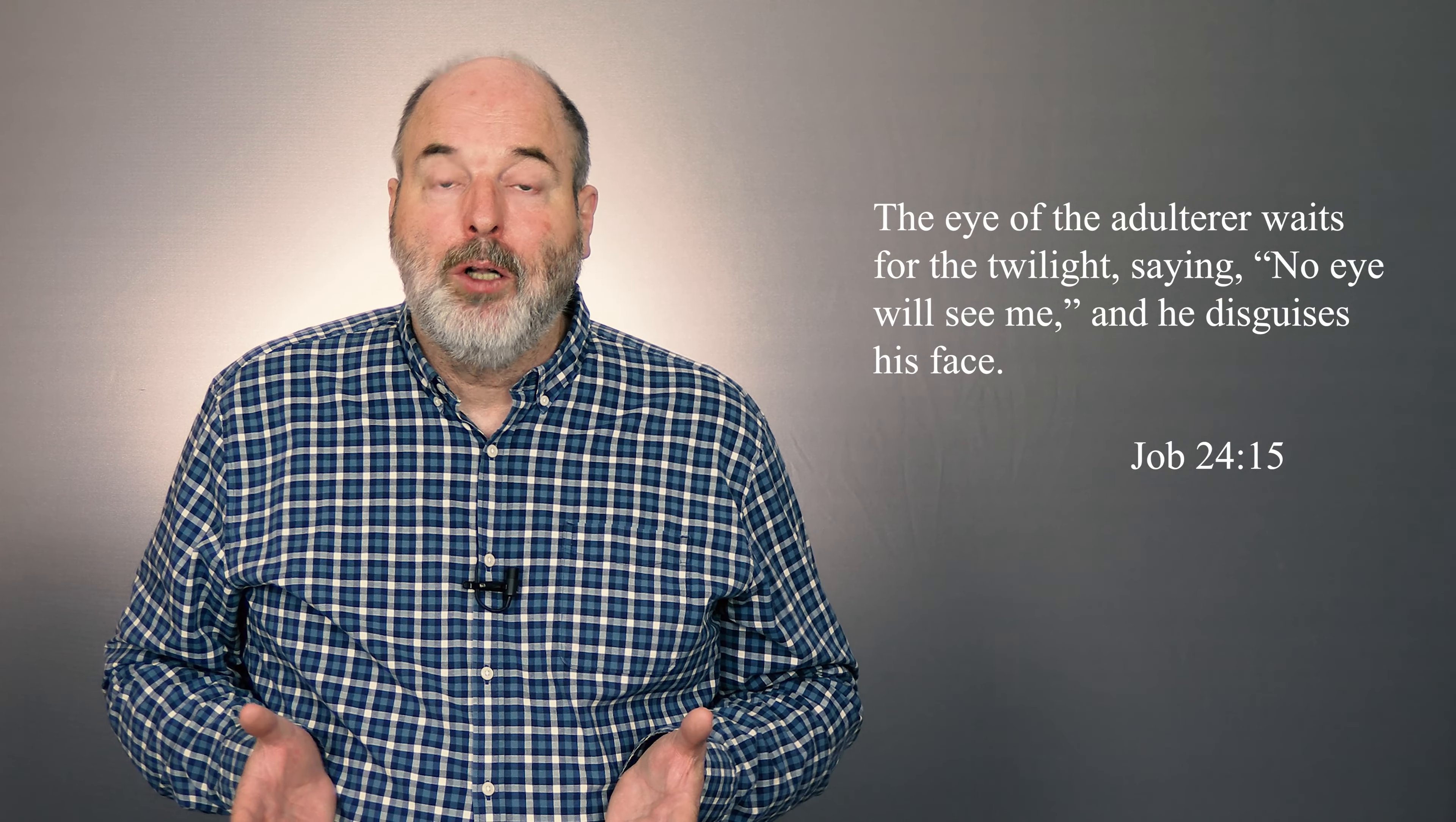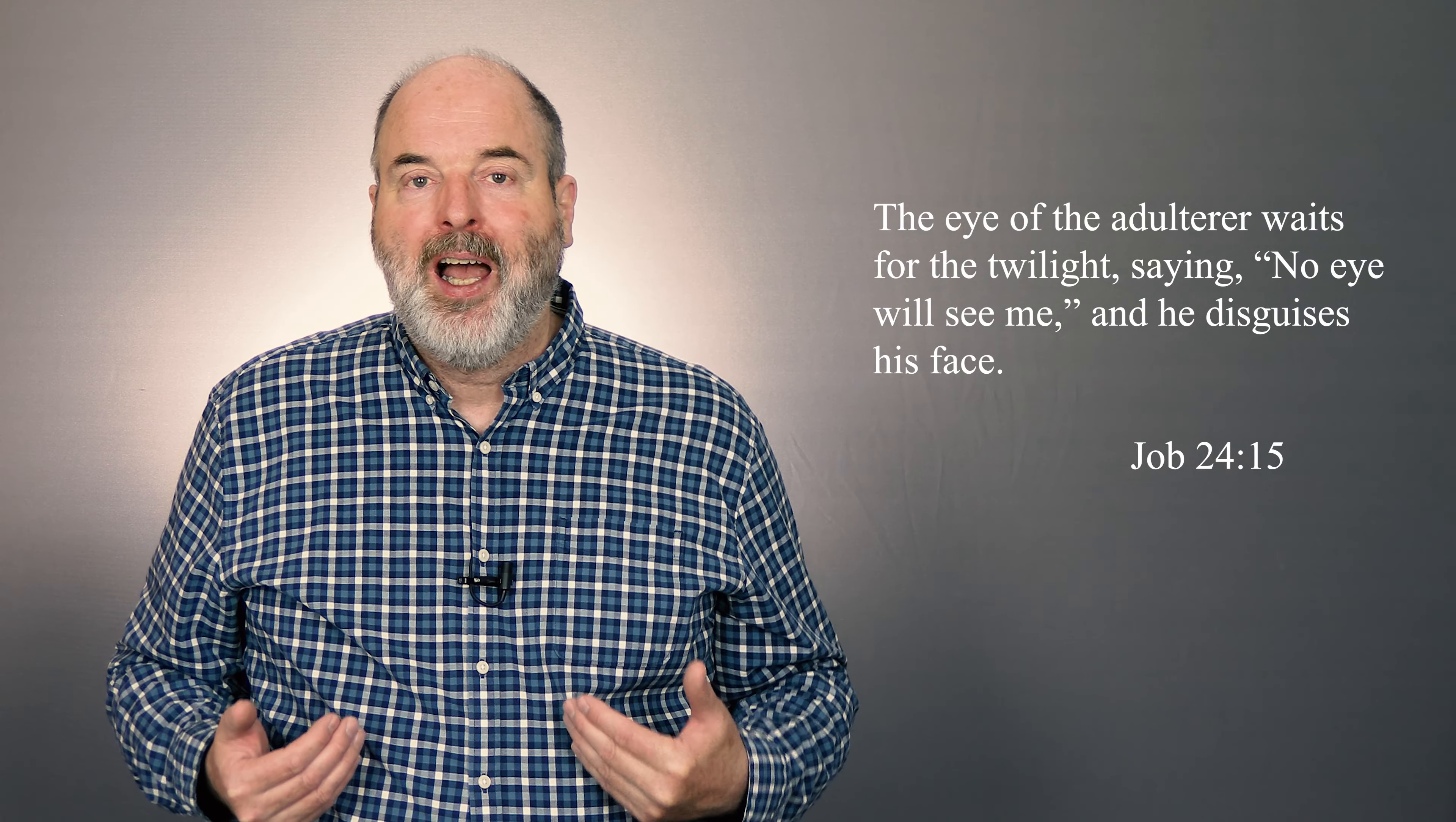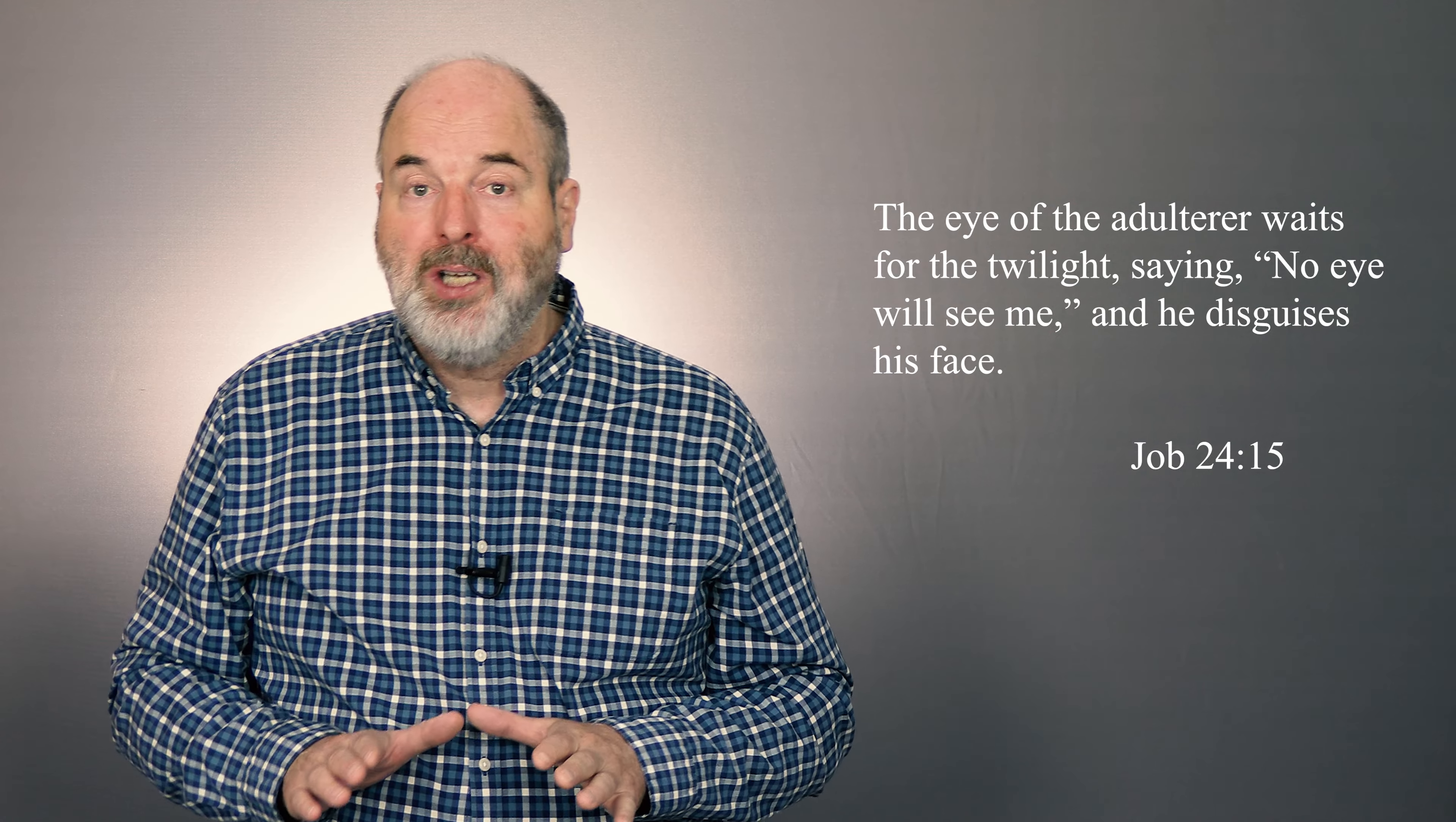The adulterer, after all, as Job observes, waits for twilight before leaving the house to have sex with another man's wife. He disguises his face and assures himself that no one will see him.